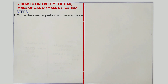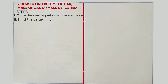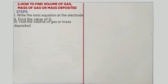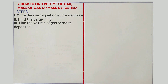After writing the ionic equation, step two is to find the value of Q, which is given by current times time. After finding the value of Q, the next step is to find the volume or the mass deposited. You take the number of electrons obtained above times 96,500, set equal to the volume at STP or RTP, and use the value of Q obtained in step two.